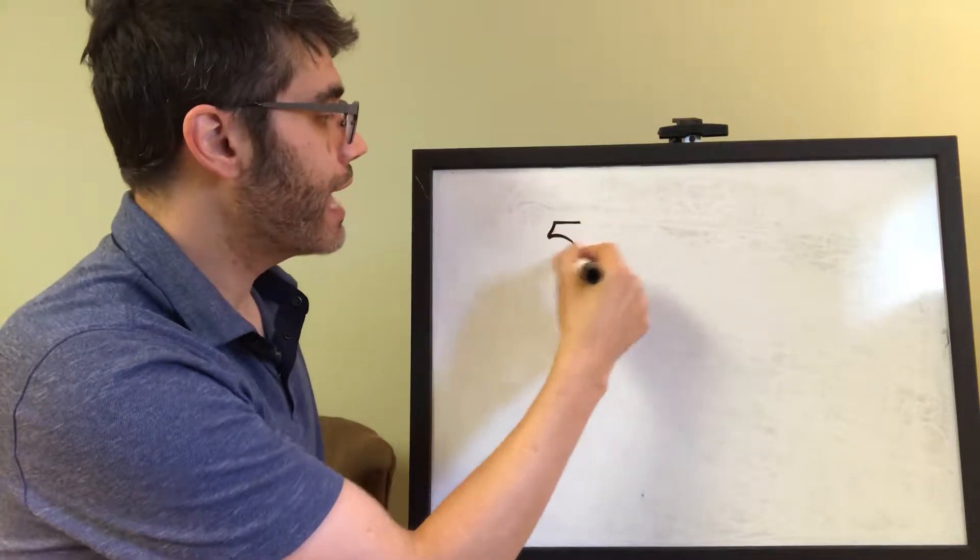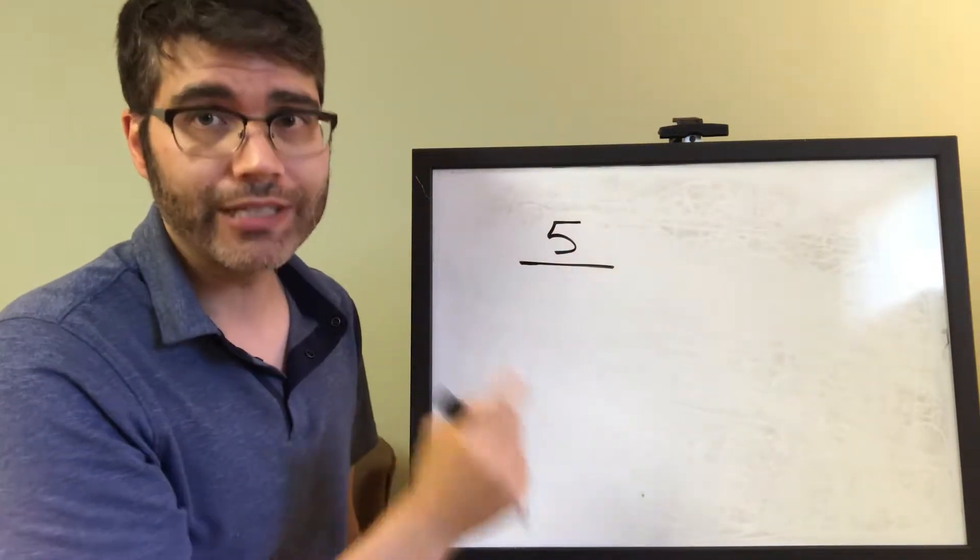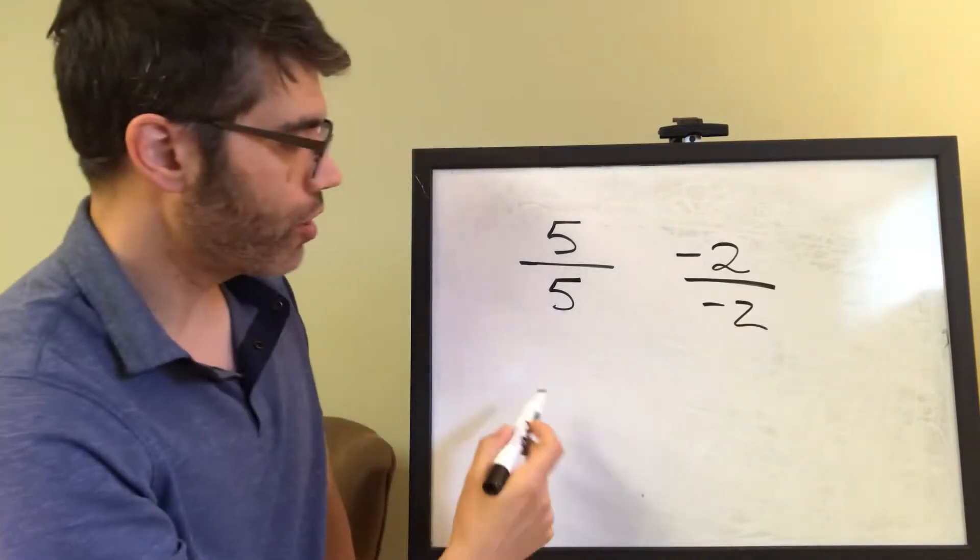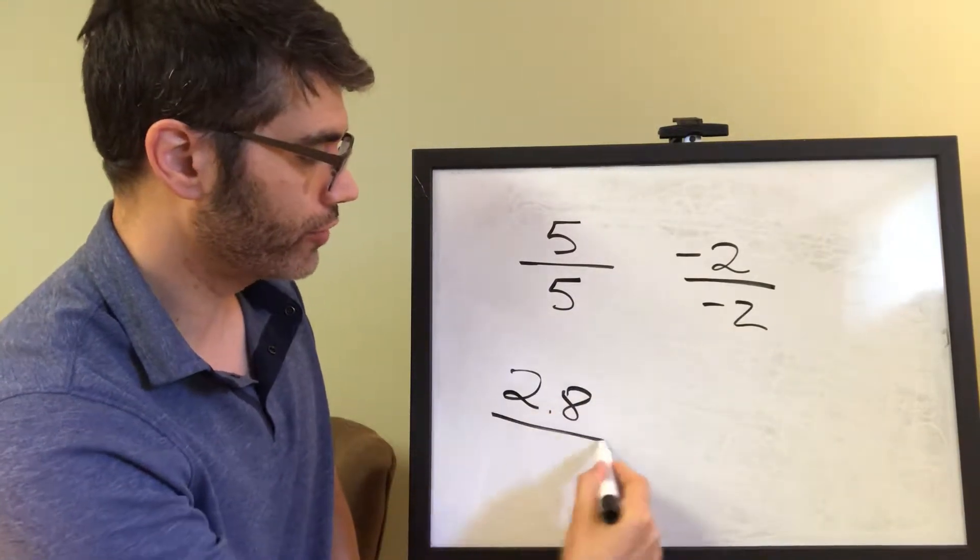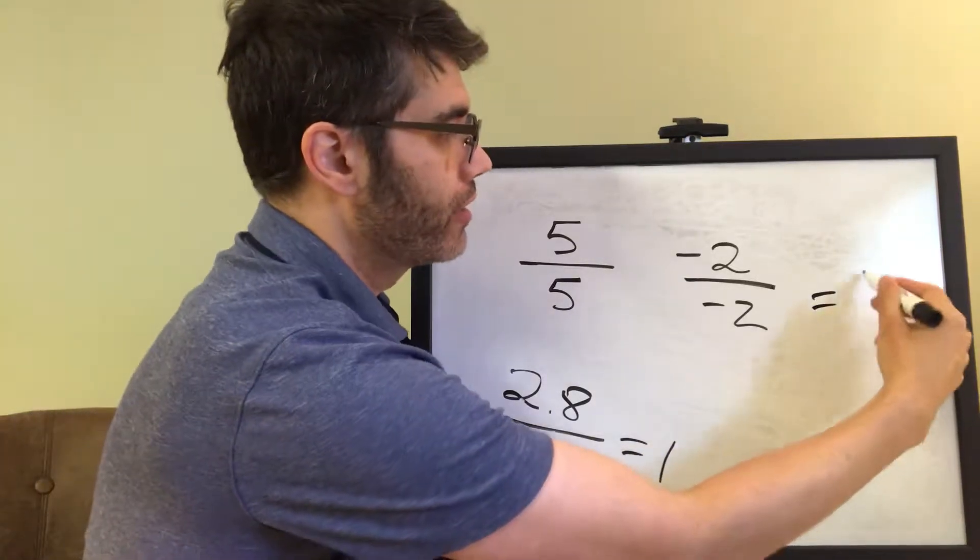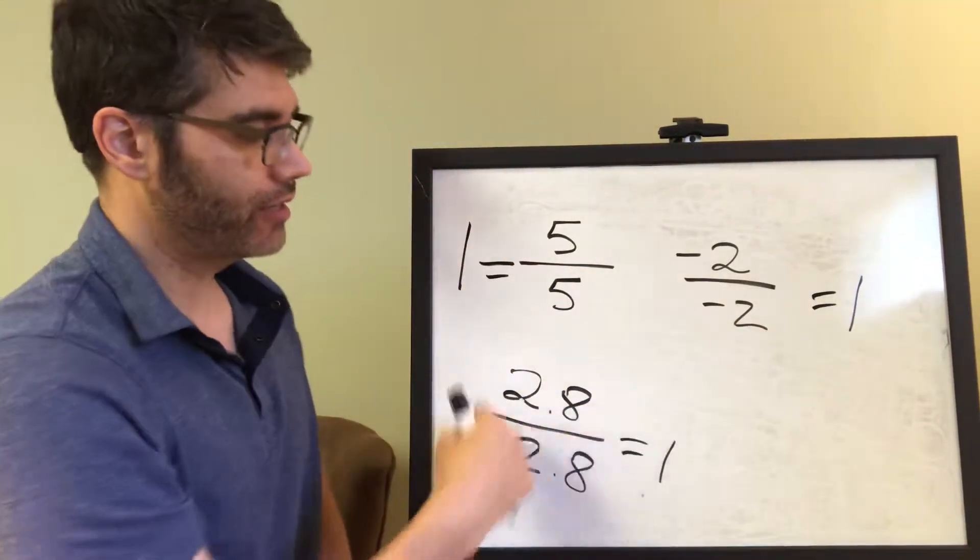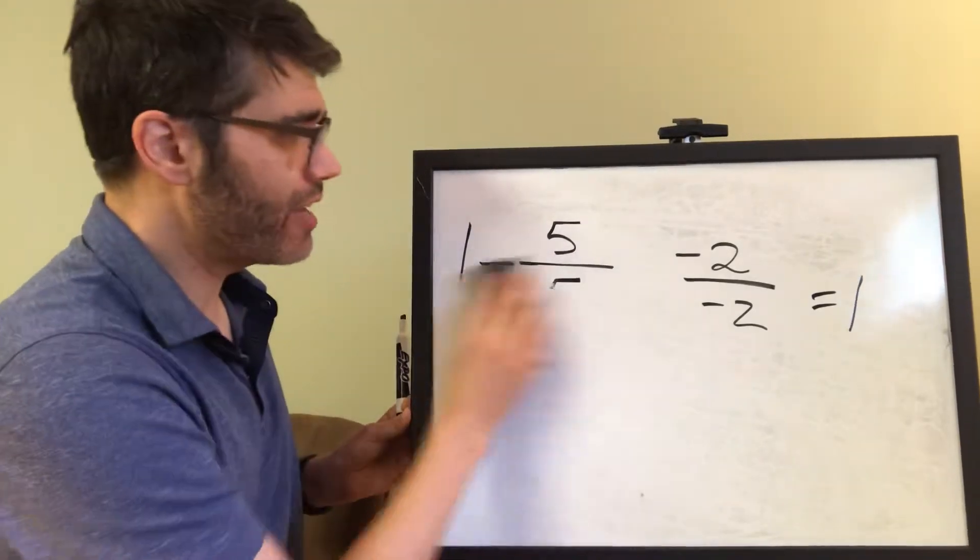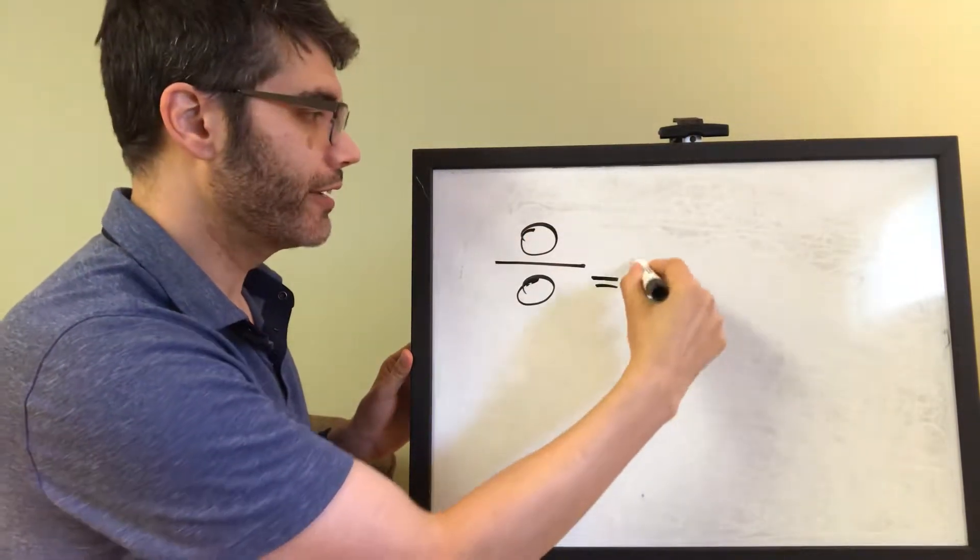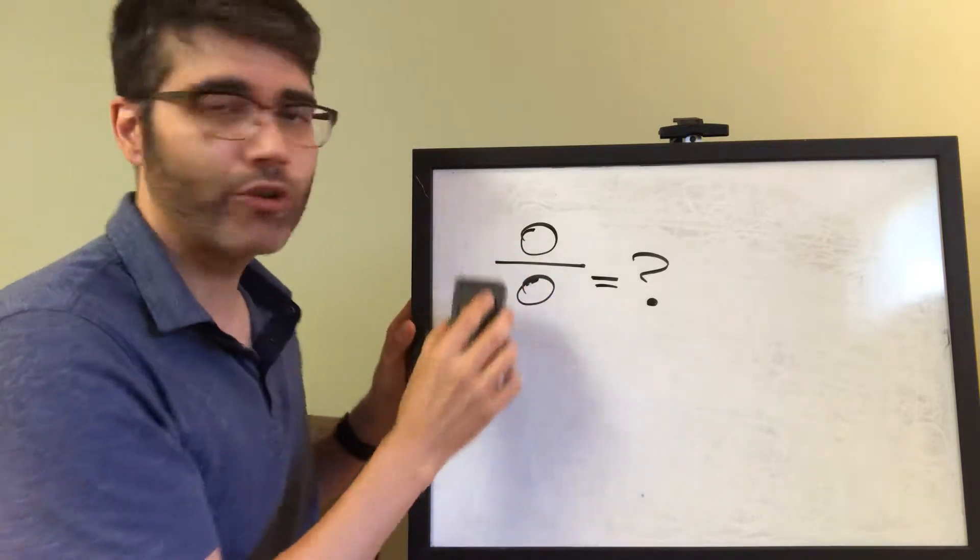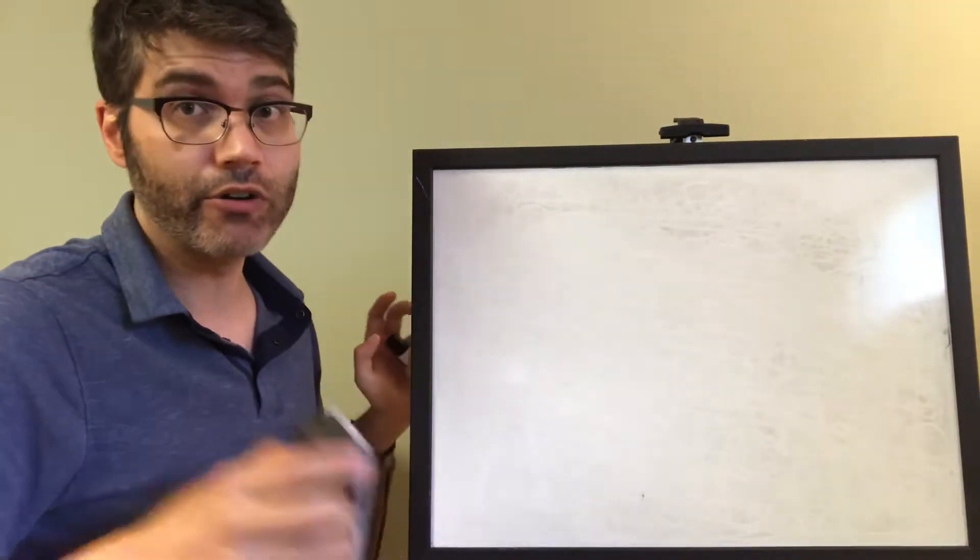The first one is going to be any non-zero number over itself. So if you have a non-zero number over itself, whether it's 5 over 5 or negative 2 over negative 2 or 2.8 over 2.8, they will always equal 1. Except for the caveat 0 over 0. 0 over 0 gets really weird, and there's actually not a complete consensus as to what 0 over 0 means. So when we talk about any number over itself, we're talking about any non-zero number over itself equals 1.